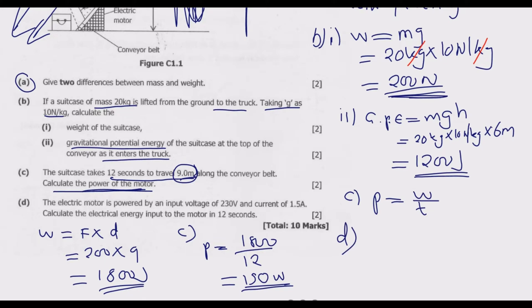Part D: The electrical motor is powered by input voltage of 230 volts and current of 1.5 amps. Calculate electrical energy input to the motor in 12 seconds. Electrical energy E equals voltage multiplied by current multiplied by time. Voltage is 230 volts, multiply by current 1.5 amps, then multiply by time 12 seconds. We end up with 4,140 Joules as the electrical energy input in the motor in 12 seconds.